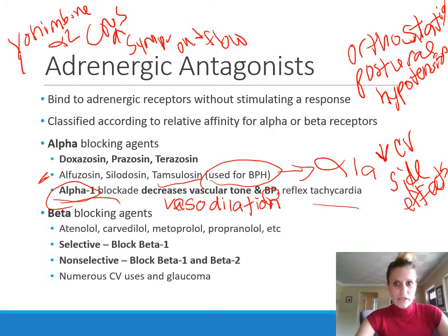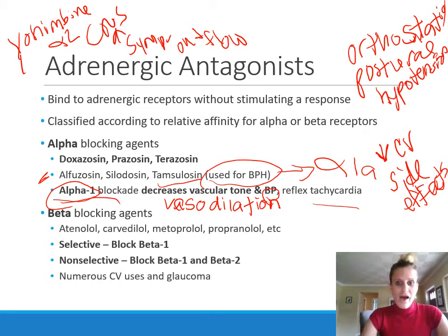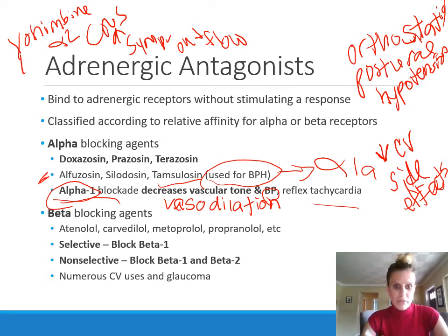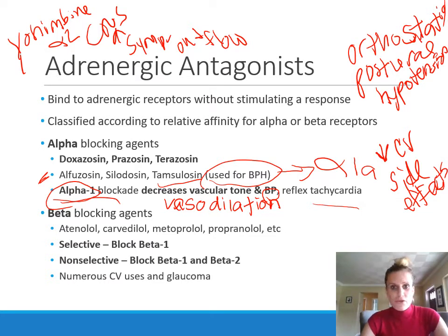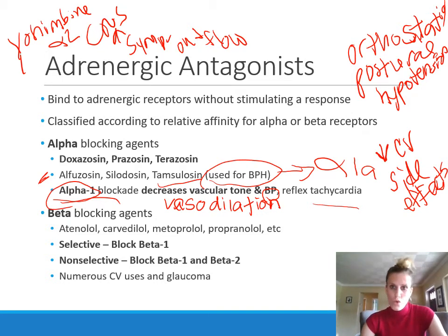Beta blocking agents — like atenolol, carvedilol, metoprolol, and propranolol — are utilized for cardiovascular conditions including hypertension. However, blocking beta receptors does not affect vascular tone. Blocking beta receptors specifically on the heart decreases heart rate and decreases contractility, and that is how we decrease blood pressure with beta blocking agents. Because they are not binding alpha receptors and not decreasing vascular tone, they do not cause postural hypotension like alpha blockers.